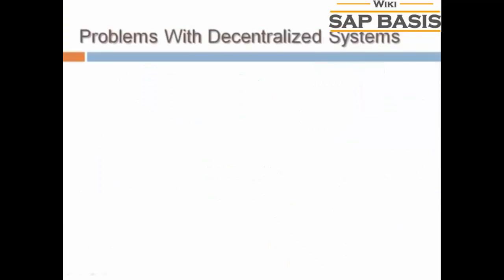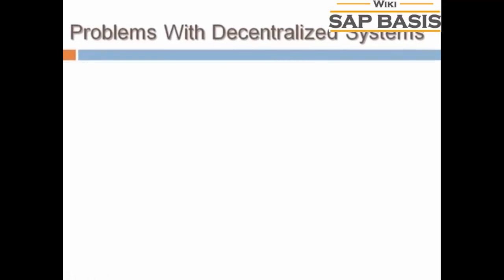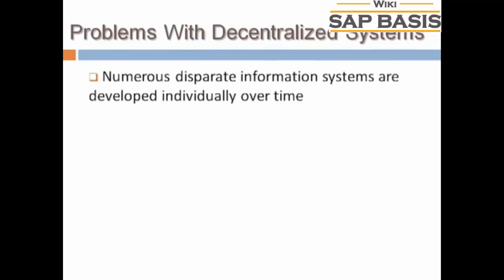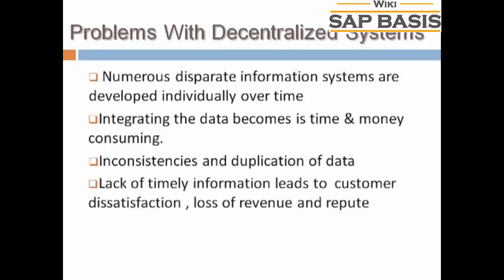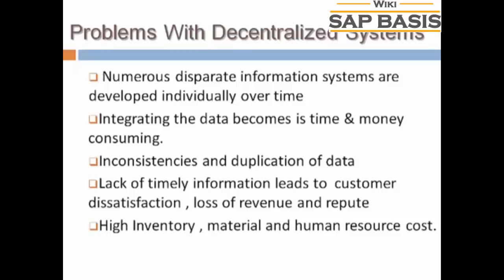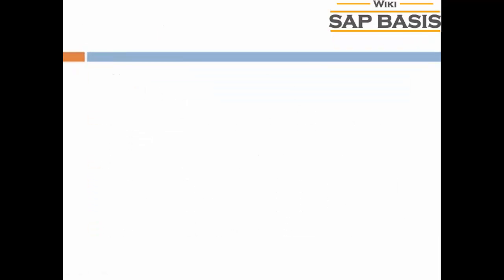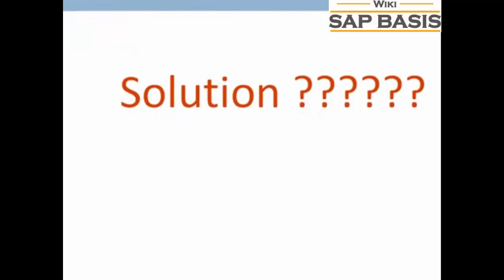These are just a few of the many problems with decentralized systems. Some major problems are: numerous disparate information systems that are difficult to maintain; integrating data is time and money consuming; inconsistencies and duplication of data; lack of timely information leads to customer dissatisfaction, loss of revenue and reputation; and high inventory, material, and human resource costs.